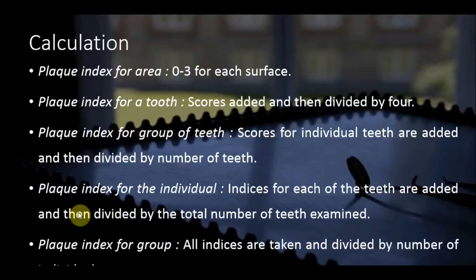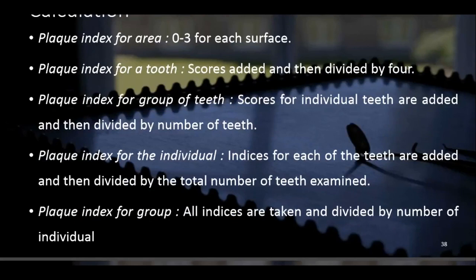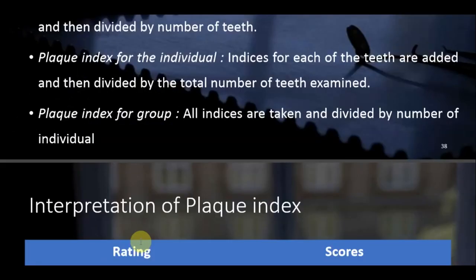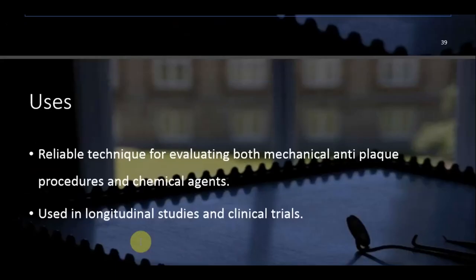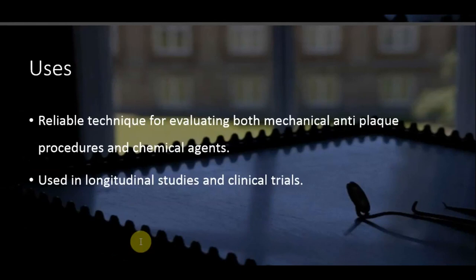For calculation, scores from all four surfaces of a tooth are added and divided by four. The Plaque Index for an individual is obtained by adding all tooth scores and dividing by the number of teeth examined. For a group, all individual indices are averaged. Interpretation: Excellent = 0, Good = 0.1–0.9, Fair = 1.0–1.9, Poor = 2.0–3.0. This index is a reliable technique for evaluating mechanical and chemical anti-plaque procedures and can be used in longitudinal studies and clinical trials.